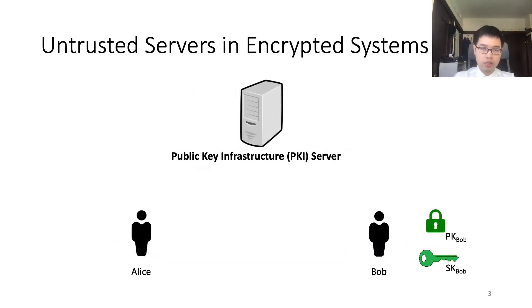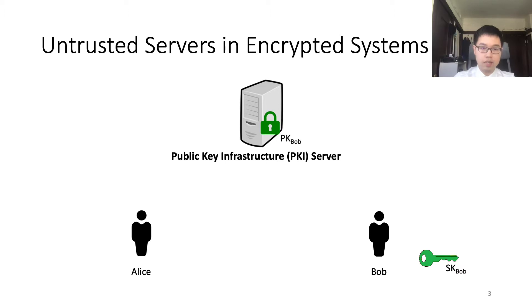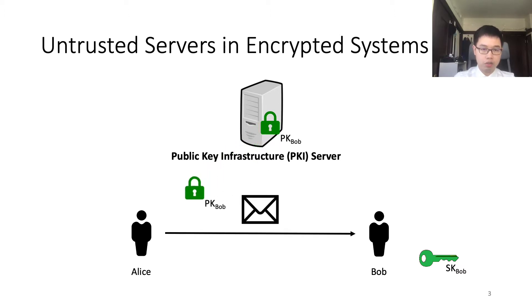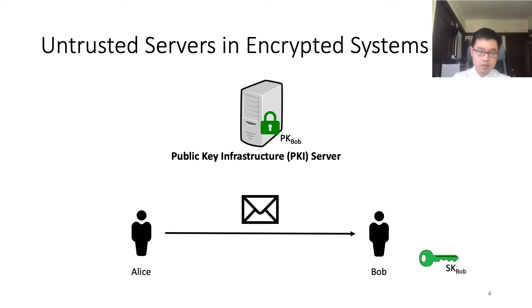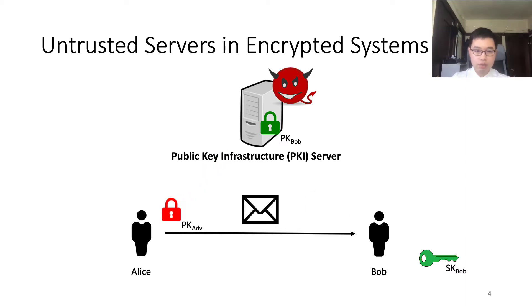To put our work into context, let's first consider the problem with untrusted servers in encrypted systems. In such systems, there is usually a PKI server which manages users' public keys. For example, Bob will put his public key on this PKI server, and later, if Alice wants to send a message to Bob, Alice will download Bob's public key from the PKI server and use it to encrypt the message. However, because the server is untrusted, it might be compromised by an attacker. So when Alice looks up Bob's public key, the server may reply with a malicious key to Alice. And if Alice uses this malicious public key to encrypt the message, the attacker might be able to decrypt and read the secrets in the message.